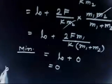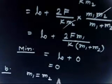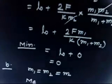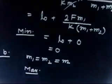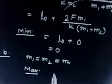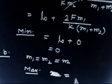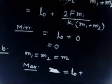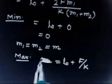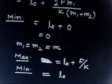For the special case where M1 = M2 = m (part A): the maximum distance becomes L0 + 2F·m/[K·(2m)] = L0 + F/K. The minimum distance remains L0.